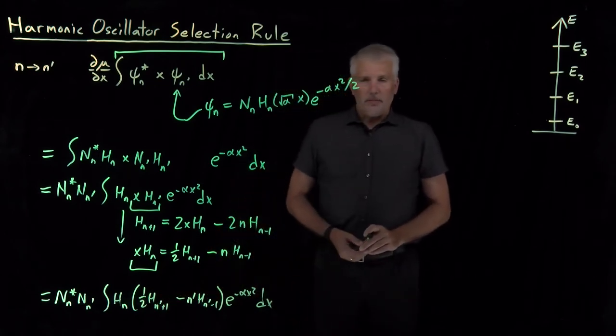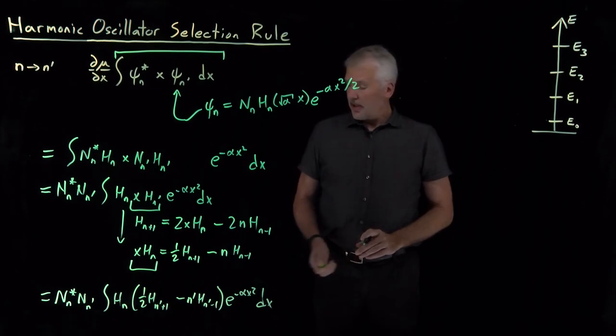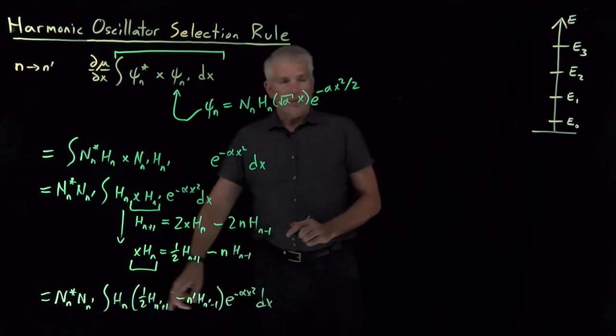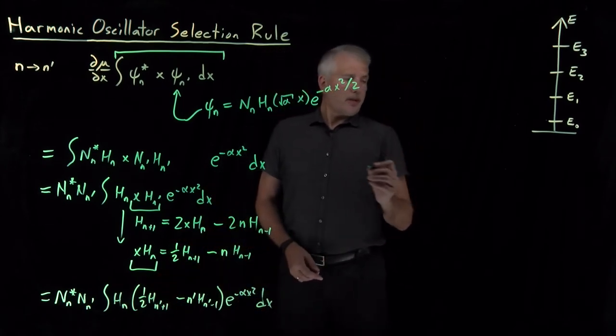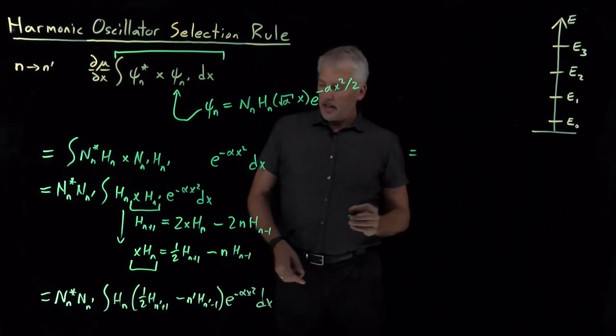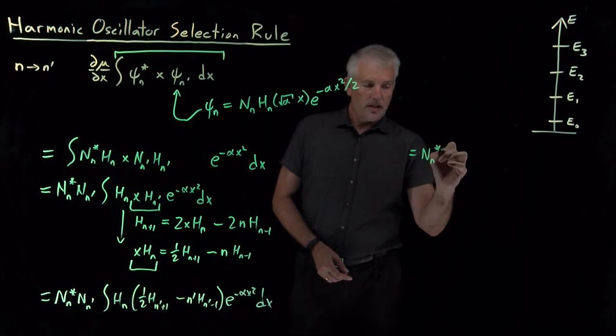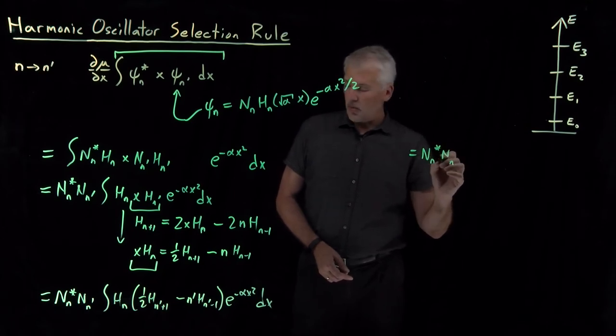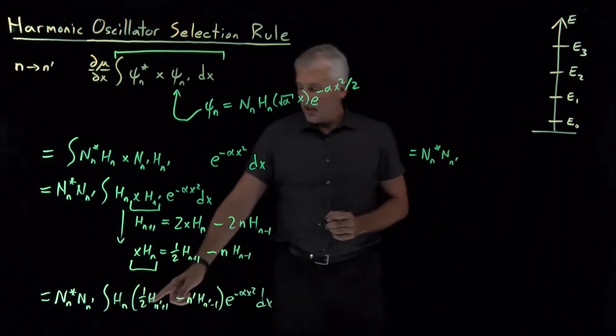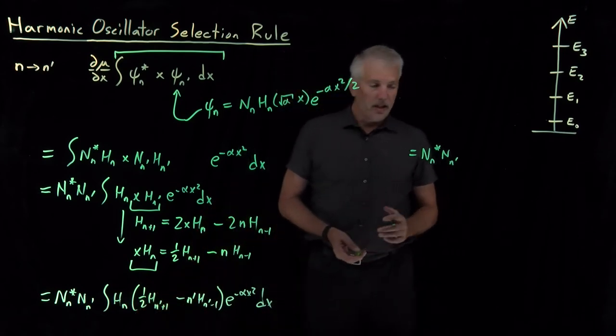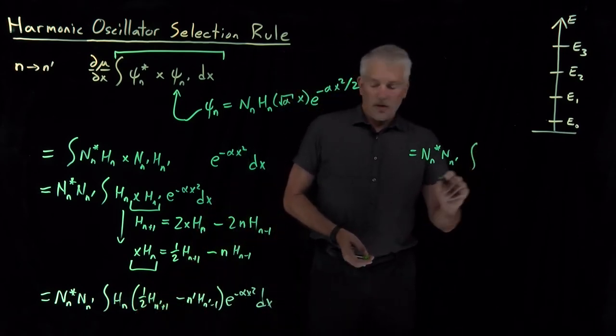That's now turned into something we can use. I'll go ahead and rewrite this one more time, moving up to the top over here. That's going to look like constants that I'm not particularly interested in, some 1 halves and n's and other numbers that I know are not 0 and I'm not particularly interested in, and then I've got integral...